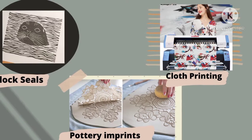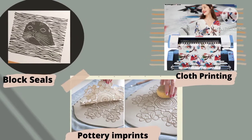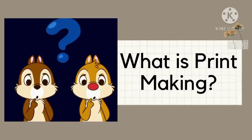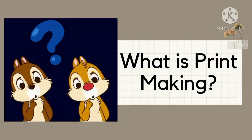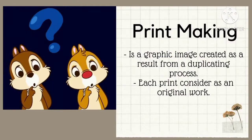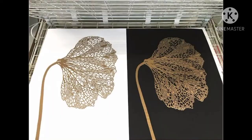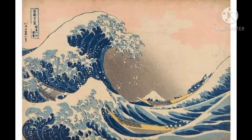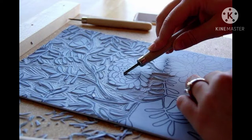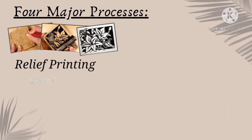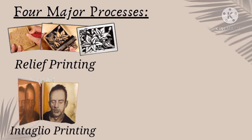There are also other early forms of printmaking that include black-glazed pottery imprints and cloth printing. So what is printmaking? Printmaking is a graphic image produced through a duplicating process where each print is considered an original work. There are four major processes in printmaking: relief printing, intaglio printing, lithography, and screen printing.